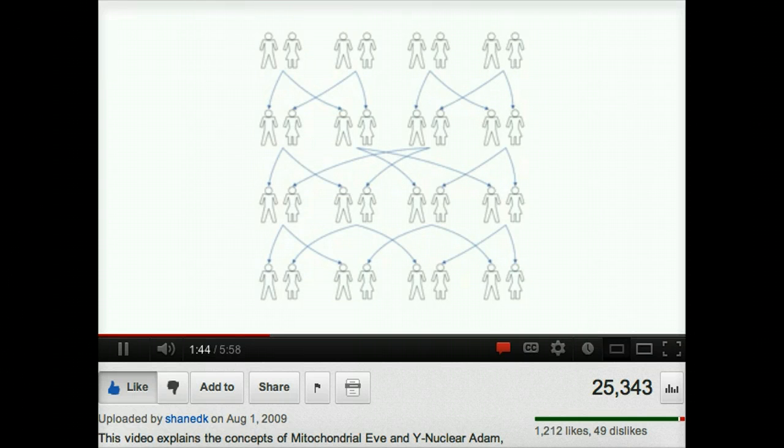Every single member of the current generation has this common ancestor along the female-only line. This means that the mitochondria they have in their cells they got from her. This is their mitochondrial Eve. But look at the graph closely.